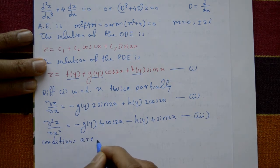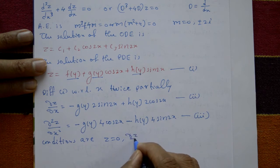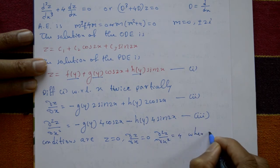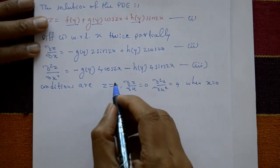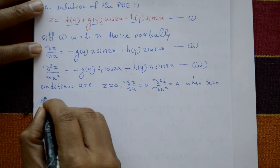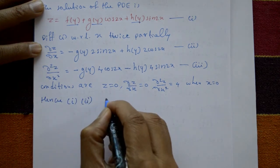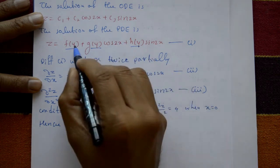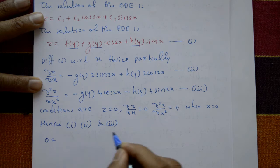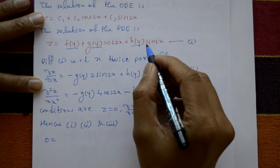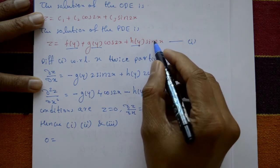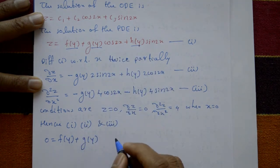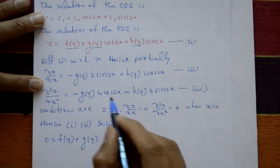The conditions are: z = 0, dz/dx = 0, and d²z/dx² = 4 at x = 0. Substituting z = 0 and x = 0 into equation 1: sin(0) = 0, cos(0) = 1, so f(y) + g(y) = 0. This is the first result.